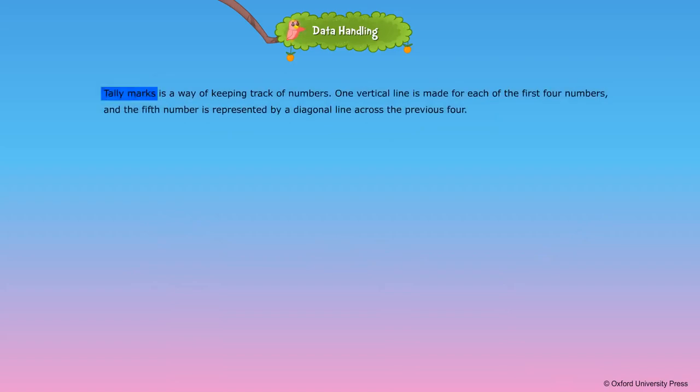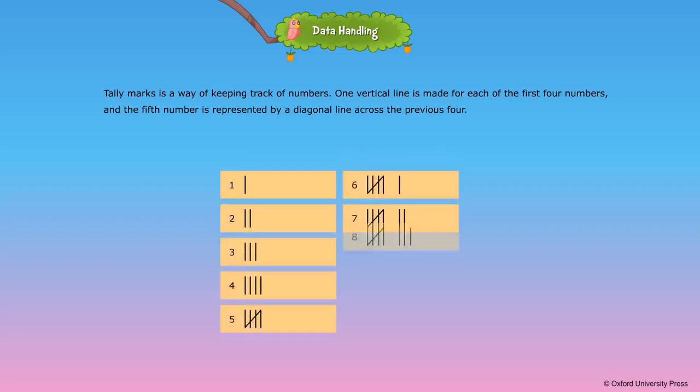Tally marks is a way of keeping track of numbers. One vertical line is made for each of the first four numbers, and the fifth number is represented by a diagonal line across the previous four. The following table shows tally marks to represent numbers from 1 to 10.